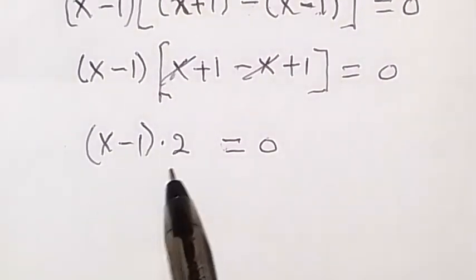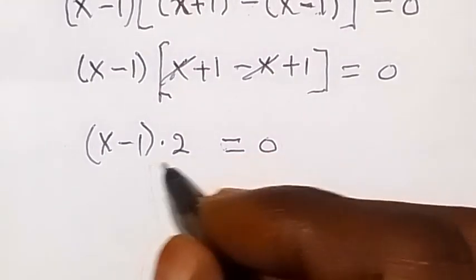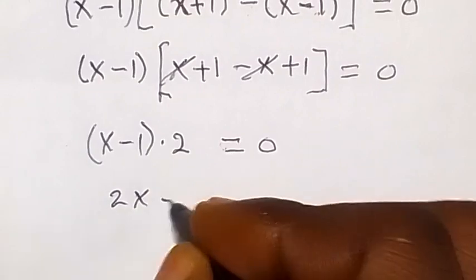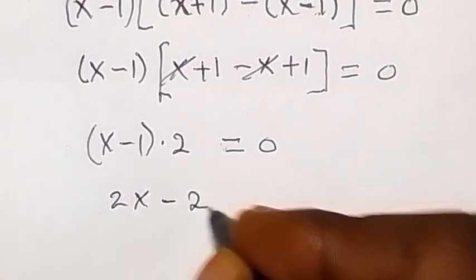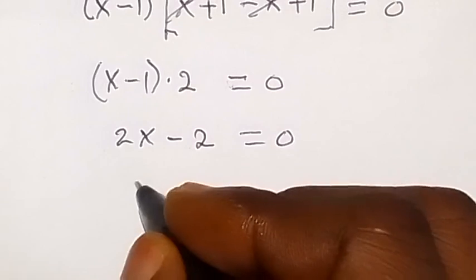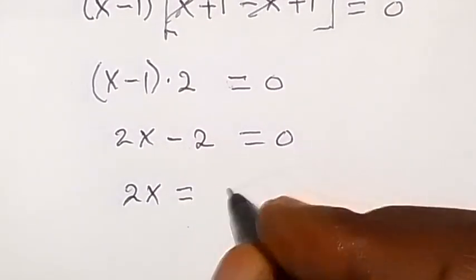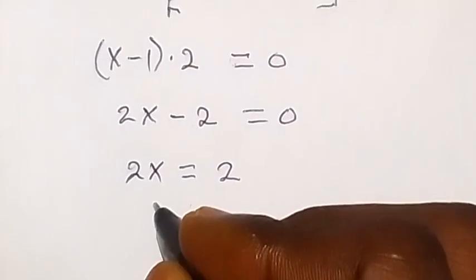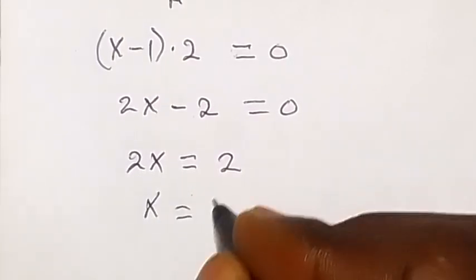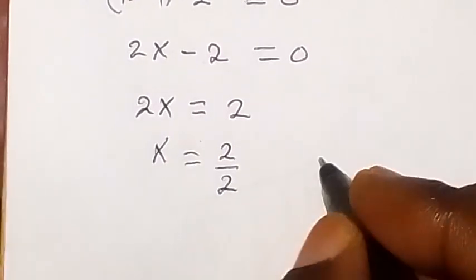Opening the bracket with the two gives us two x minus two equals zero. Taking minus two to the other side: two x equals two. Dividing both sides by two, therefore x equals one.